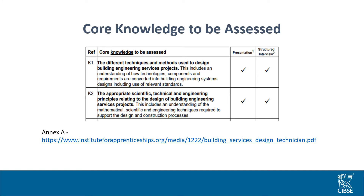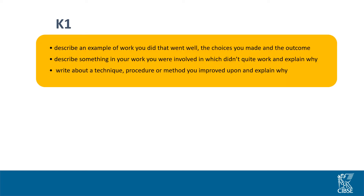I'm not going to go into detail about every competency in this presentation. I'll pick examples from each of the three sections and give you a sample of what you might be looking to submit. I would strongly recommend that you read through the guidance document where all the competencies are laid out for you. For the knowledge section, I'll look at competencies K1 and K2. For K1 — the different techniques and methods used to design building engineering services projects — you might want to think about describing an example of work that went well, the choices you made and the outcomes, something that didn't quite go so well and why, or a technique, procedure or method you improved upon.